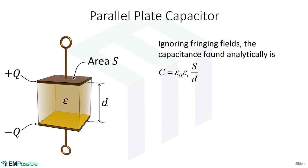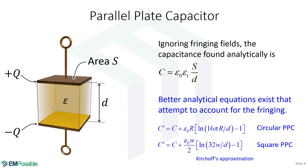That derivation does not account at all for fringing fields — it assumes the electric field is perfectly constant and uniform between the plates, and nothing exists outside. There do actually exist equations that attempt to account for fringing fields. These are called Kirchhoff's approximation, and even these depend on the separation D being very small. I'm showing two forms: one for a circular plate capacitor and one for a square plate. The C term is the original derivation, and we add an extra term to account for fringing fields.